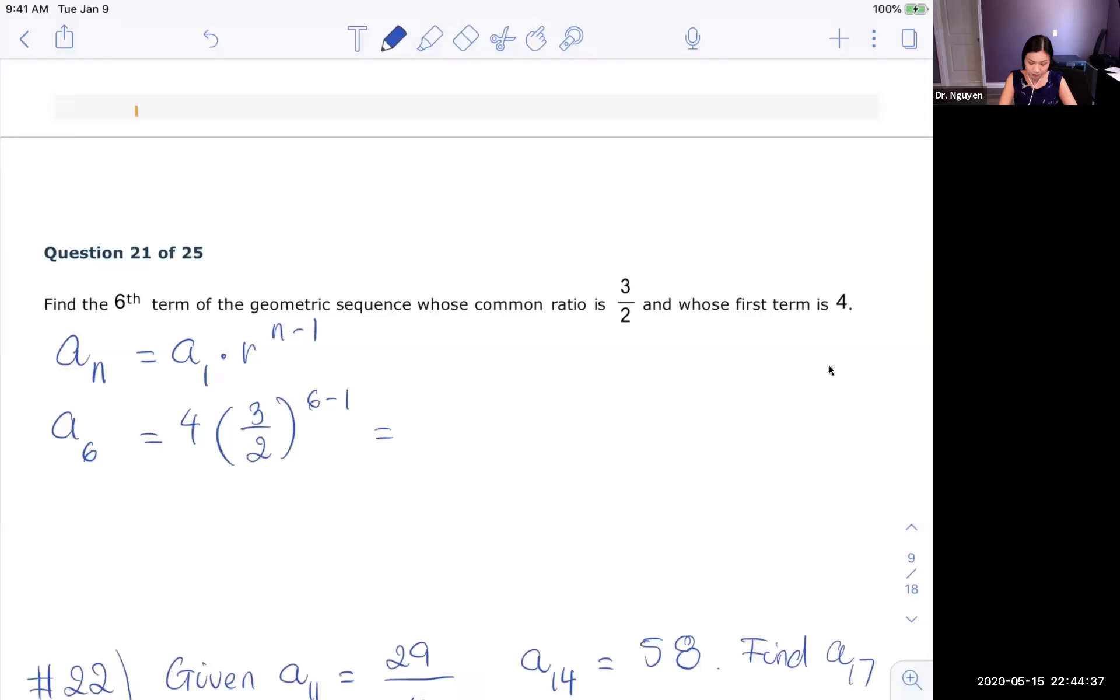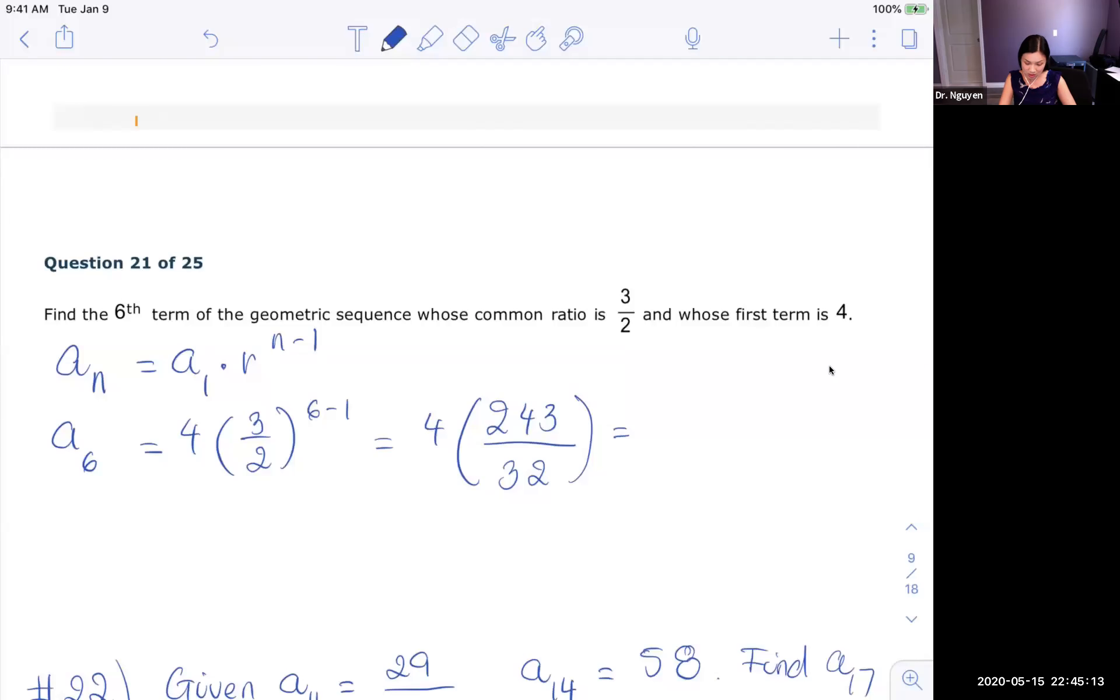So from here, we can definitely work it out. You're going to take 3 to the fifth power and then over 2 to the fifth power. So what I have is 243. I don't want to use decimal, I'm just going to use fraction. So 2 to the fifth power, that's 32. And then we can simplify it. If I simplify, then I'm going to cancel out 4 and 32, which is 8. So the answer should be 243 over 8.